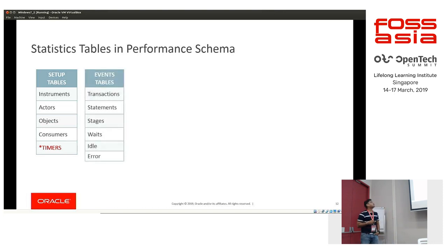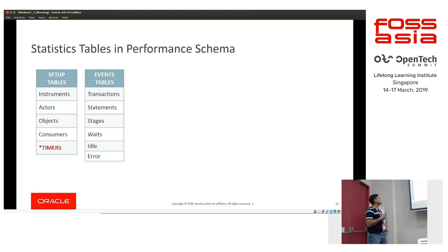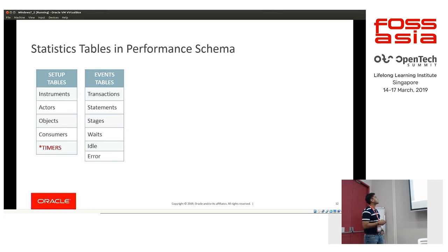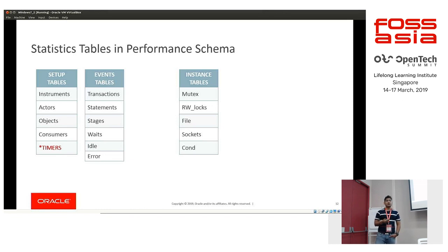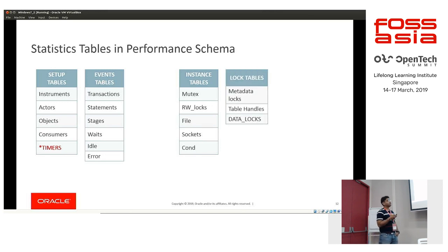We have tables for different events happening on the server — transactions, statements, stages, waits, and errors. We have instance tables covering all the mutexes in the MySQL server code, the rwlocks, and profiles. We also have log tables for metadata locks, table locks, and data locks (added in 8.0).